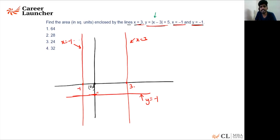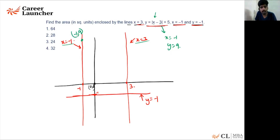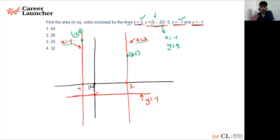To draw y = |x - 3| + 5, put in the boundary x values. At x = -1: y = |-1 - 3| + 5 = 4 + 5 = 9, giving point (-1, 9). At x = 3: y = |3 - 3| + 5 = 5, giving point (3, 5). Note that x - 3 = 0 at x = 3 itself, which is one of our boundary lines, so this approach works well here.